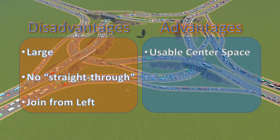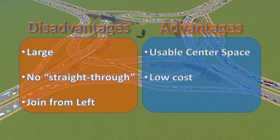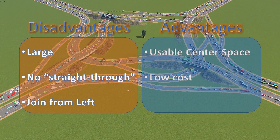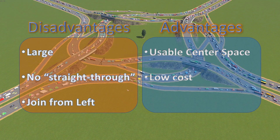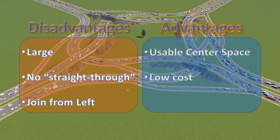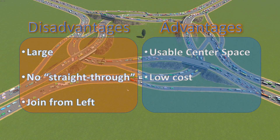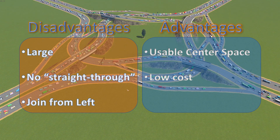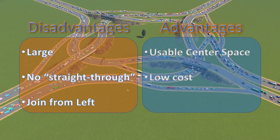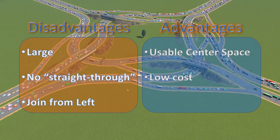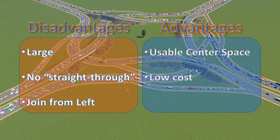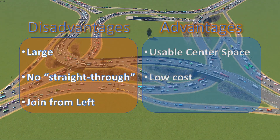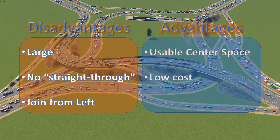On the positive side we have low cost. With this design we have just four short single-span bridges. Because overpasses are the most expensive parts of an interchange to build, having just four should save us a lot of money — not just in construction but also in the maintenance and repair of those bridges over their lifespan.